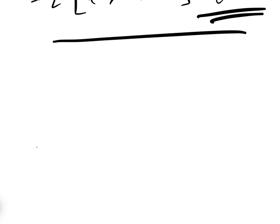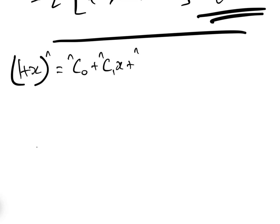We're going to give the three proofs. First, let's look at one plus X to the power of N — that's the basic binomial expansion: NC0 plus NC1·X plus NC2·X² and so on up to NC(N-1)·X^(N-1) plus NCN·X^N.